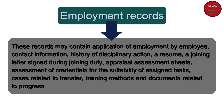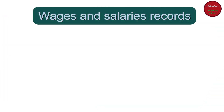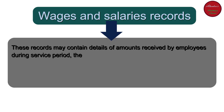Employment records may also contain appraisal and assessment sheets, assessment of credentials for the suitability of assigned tasks, cases related to transfer, training methods, and documents related to progress. The second type of records are wages and salaries records, which may contain details of amounts received by employees during their service period.